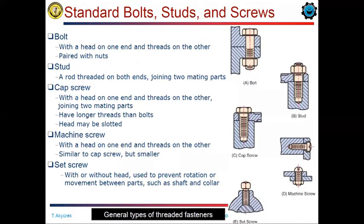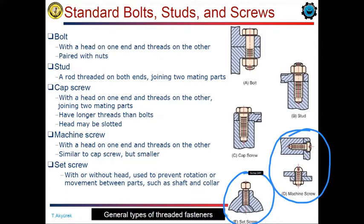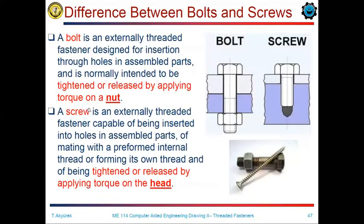We have different types of fasteners. Bolts are used within the pair of nuts. We also have stud fasteners, which have two threads on each end. We also have cap screw fasteners, which are the same as the bolts but they are used without a nut. The machine and setting screws are used for making secure adjustments between the parts.